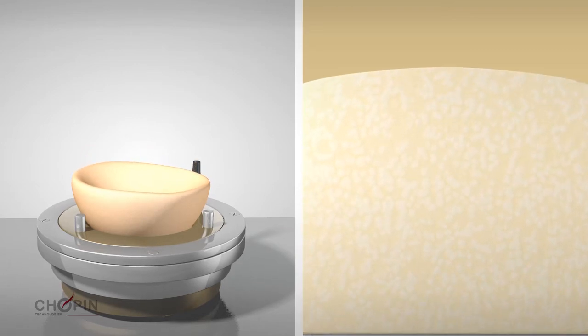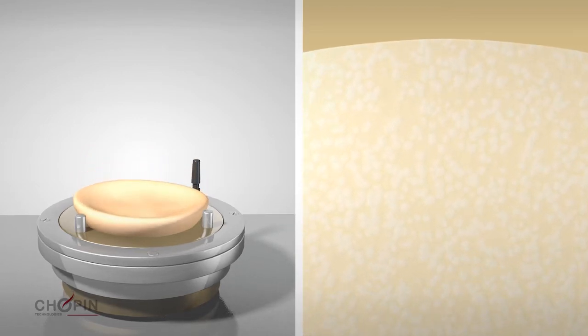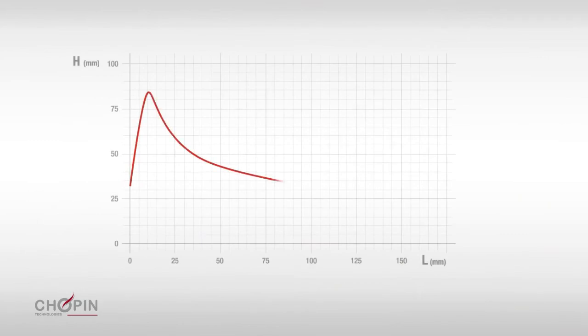The alveograph can be used to analyze all types of wheat: soft, hard and durum. It provides four key measurements.